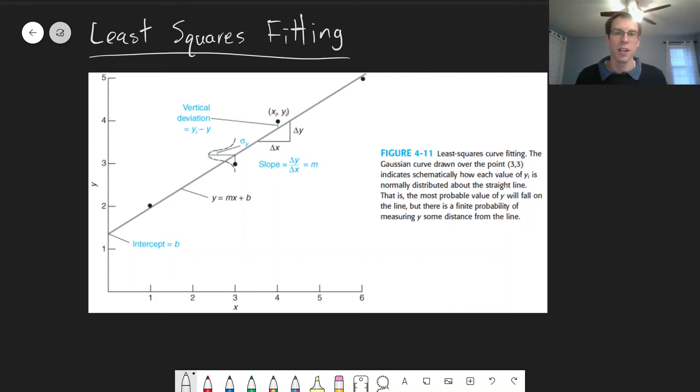The final topic we'll be considering in Chapter 4 is least squares fitting, particularly linear least squares fitting where we're fitting data to a line. This shows up a lot in analytical chemistry when we do calibration curves.